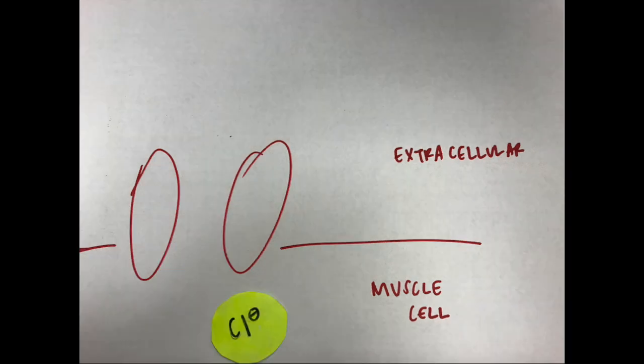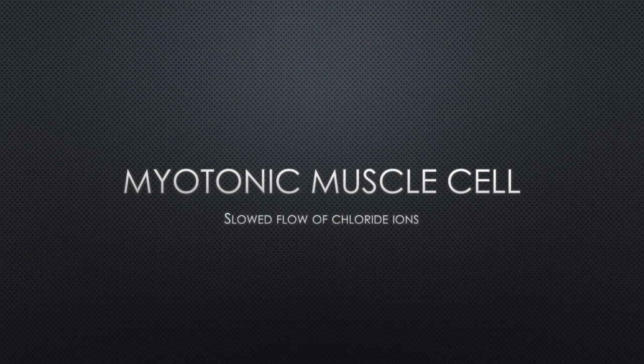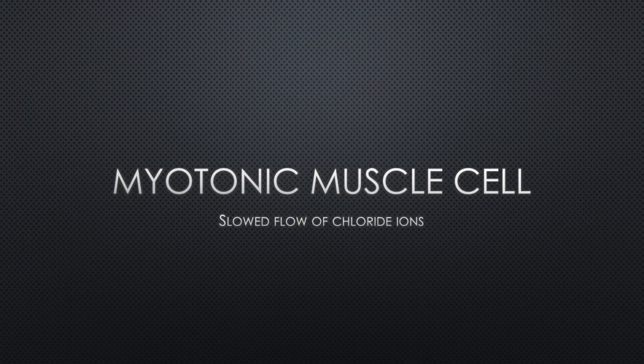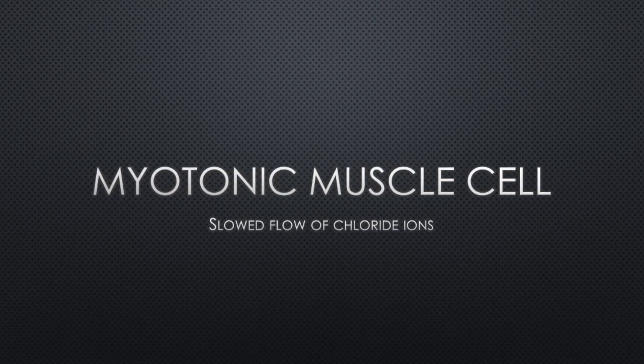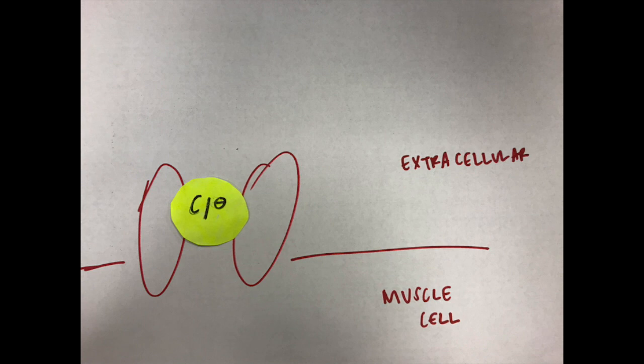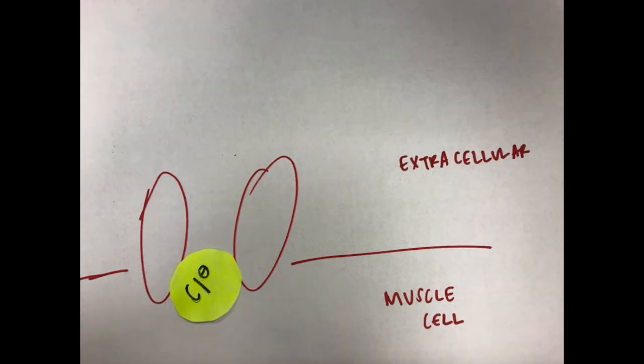In the myotonic goat, there is a mutation in the chloride channel that makes it less efficient at letting chloride through. The skeletal muscles contract more easily and take longer to relax, which leads to stiffened muscles, and therefore the goat falls to the ground.